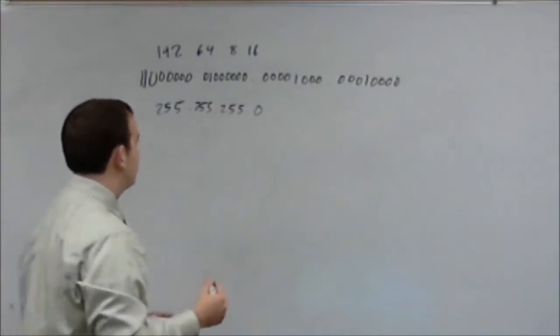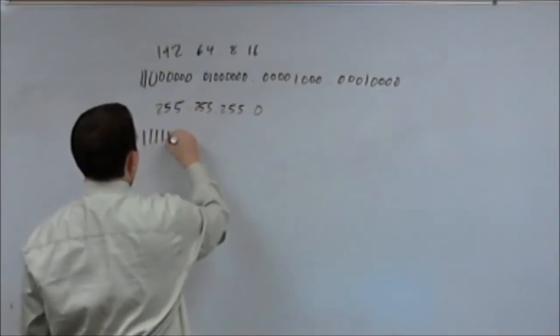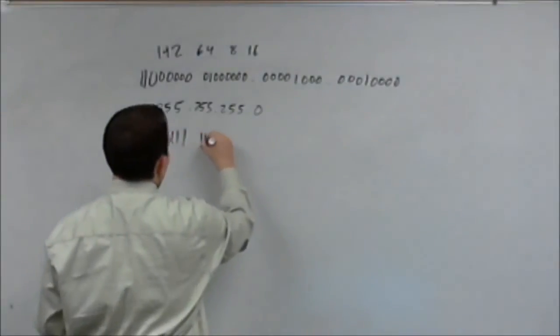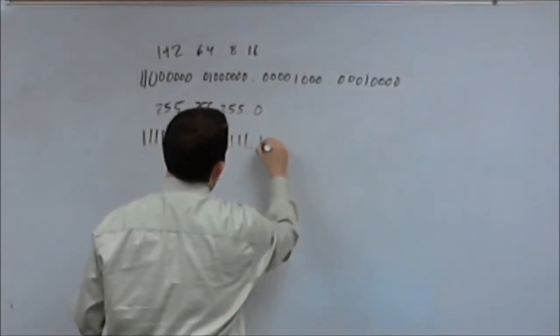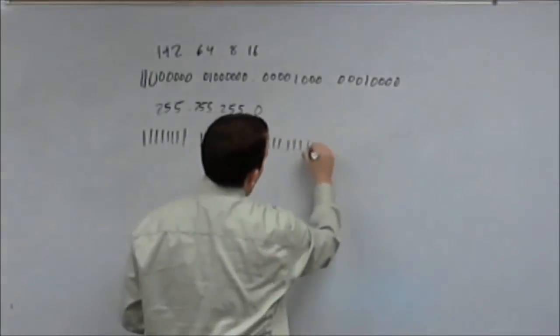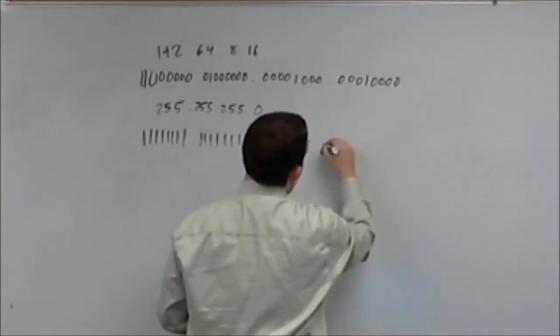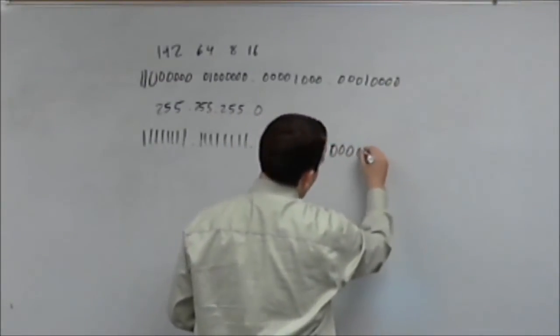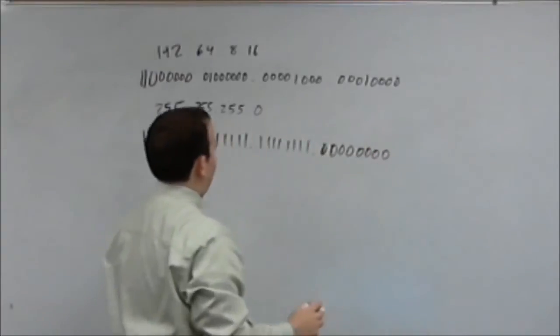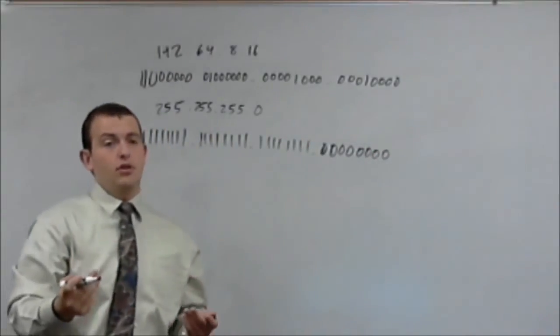Now, the subnet mask is going to be 11111111.11111111.11111111.00000000. So you've got 24 ones followed by 8 zeros.